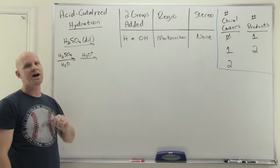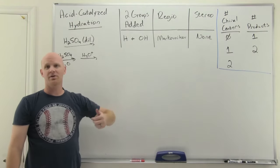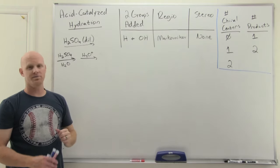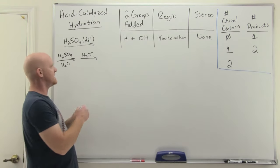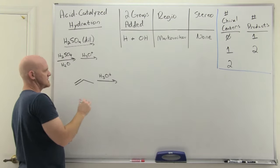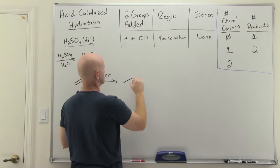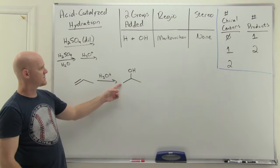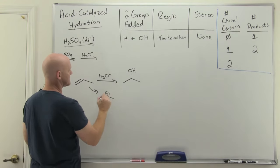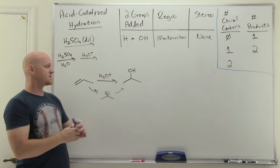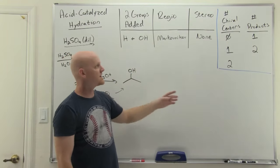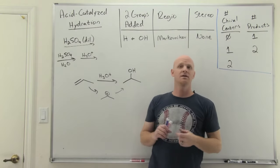There are three different reactions to accomplish hydration, each with their differences. For acid-catalyzed hydration using H3O+, the product has H added to the less-substituted side and OH to the more-substituted side — that's Markovnikov addition. It goes through a carbocation intermediate. In this case, we did not form any chiral centers, which is why we get just the one achiral product.